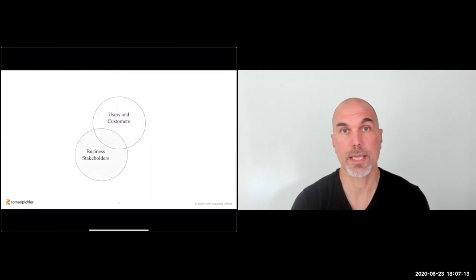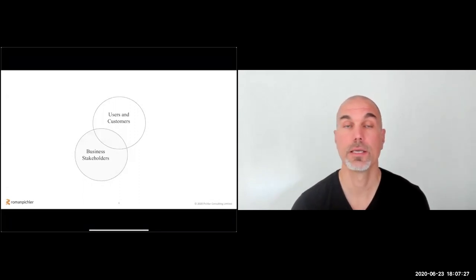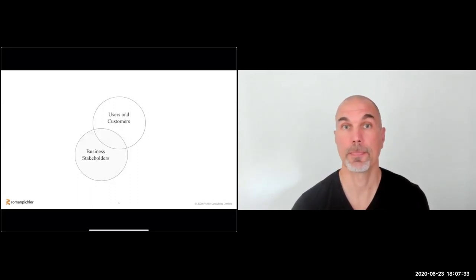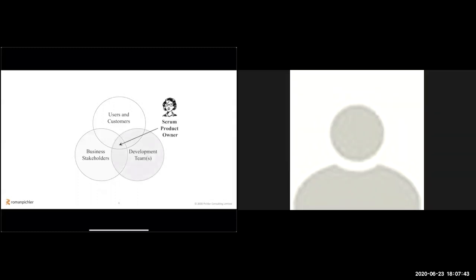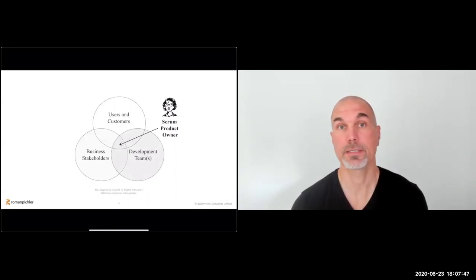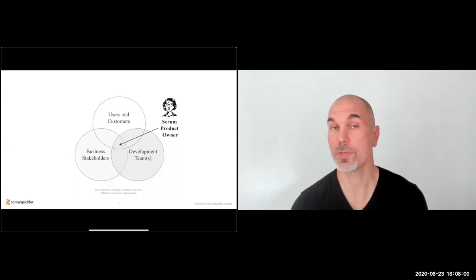Then we have the stakeholders — the internal stakeholders from various departments and business units. For a commercial product, that could be someone from marketing, a sales rep, maybe someone from service or support, a finance person, or another department or business unit. And then we have one or more development teams. The product owner should interact with all three groups, understanding their perspectives and leveraging their expertise, knowledge, and creativity to progress the product and create value for users and the business.